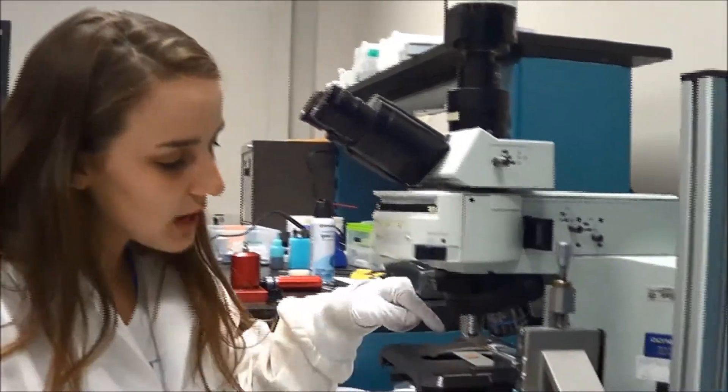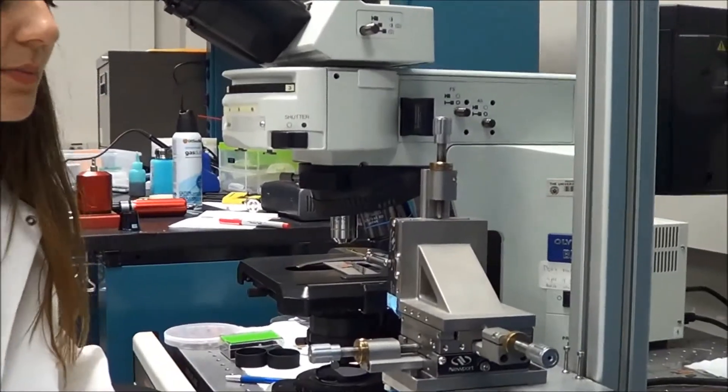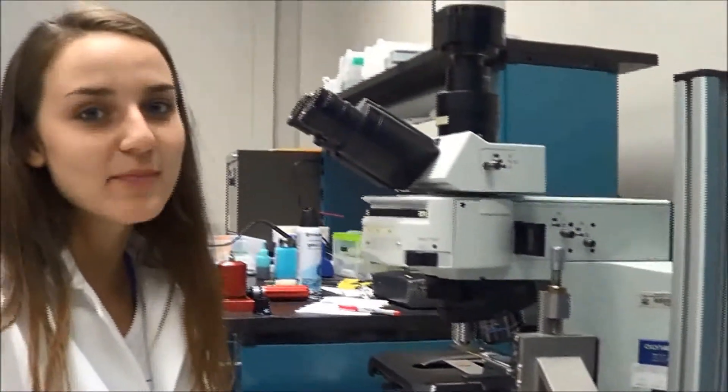Next step is heterostructure fabrication. Using our micro-manipulator, we can use the microscope to observe which flake we want to pick up, use this sharp tungsten tip to lift off the WSE2 flake and place it on top of our MOSE2 flake.